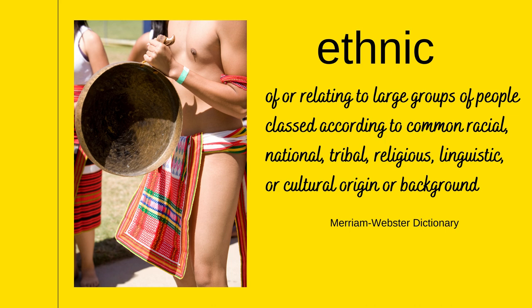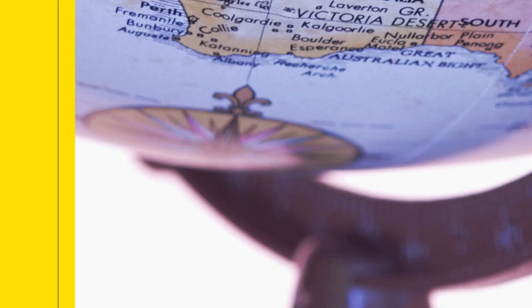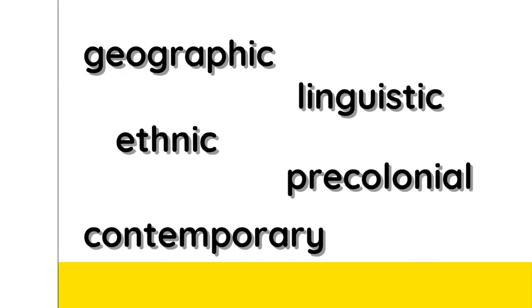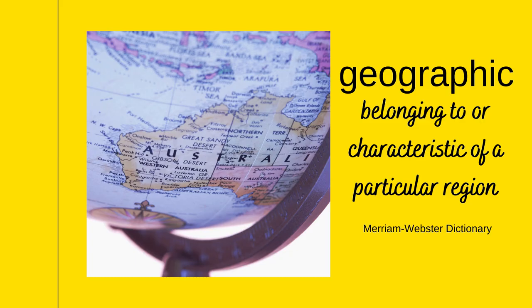Let's proceed to picture number two. Yes, it is a globe. Which of these words is globe related to — geographic, linguistic, ethnic, pre-colonial, or contemporary? It is related to geographic. Geographic means belonging to or characteristic of a particular region.